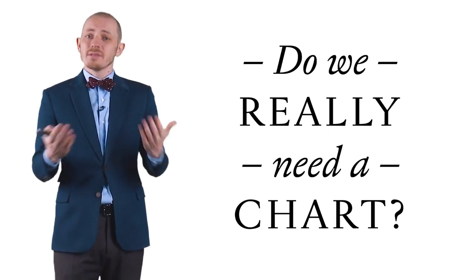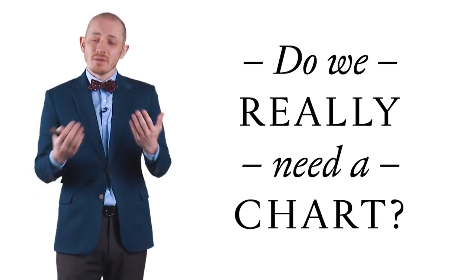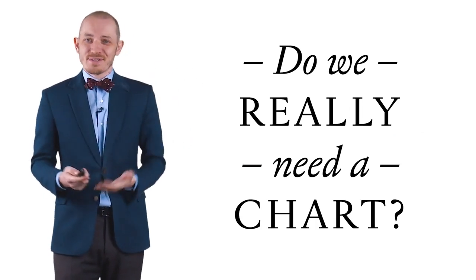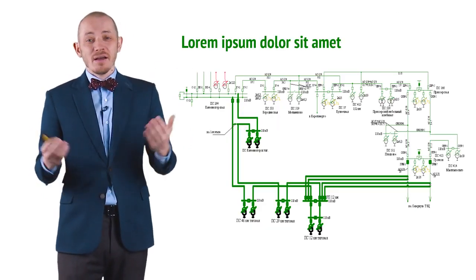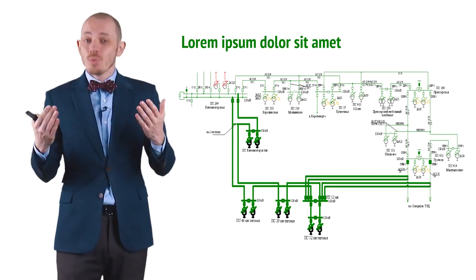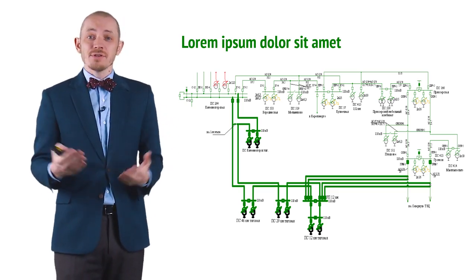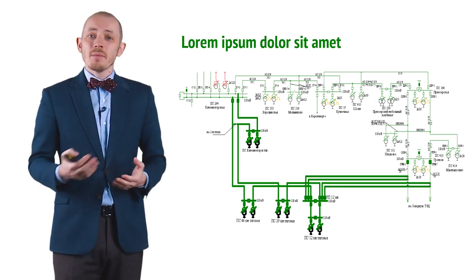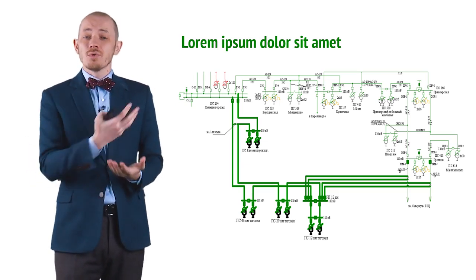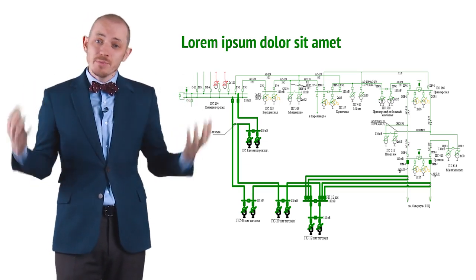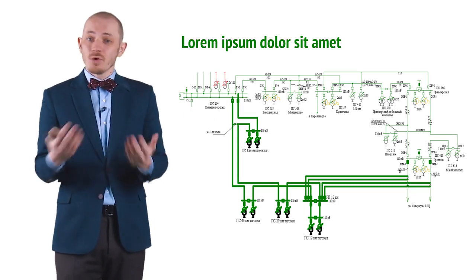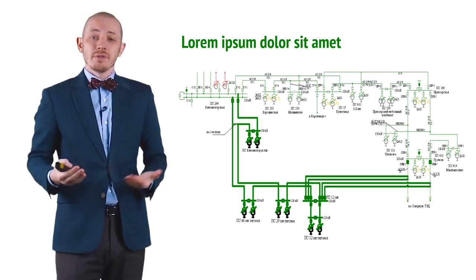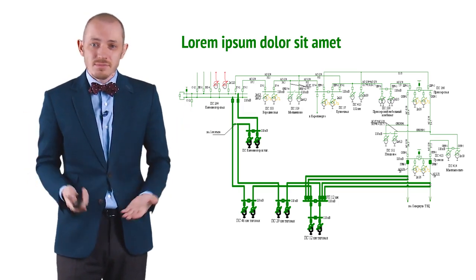This is the question you should be asking yourself all the time when you work with charts. This one works when you have five engineers locked up in a confined space, but this wouldn't work for a much bigger audience. If you have 500 people at a conference, you should not be showing stuff like that.